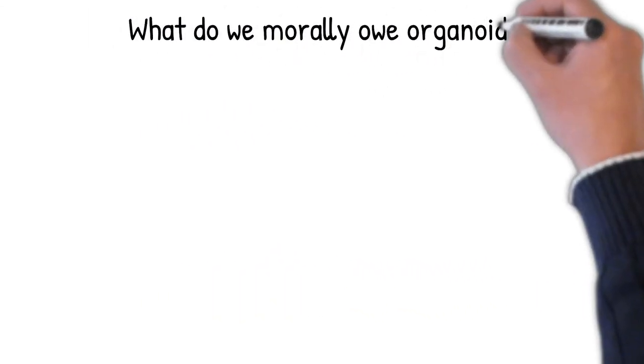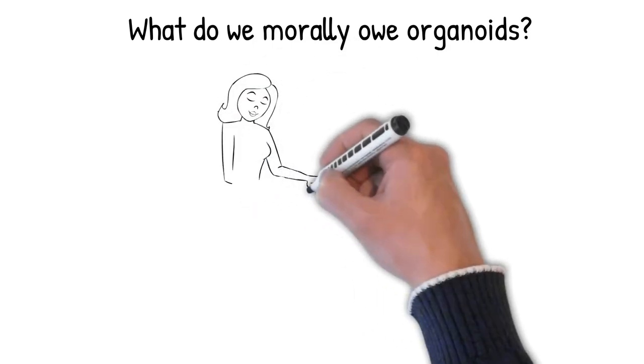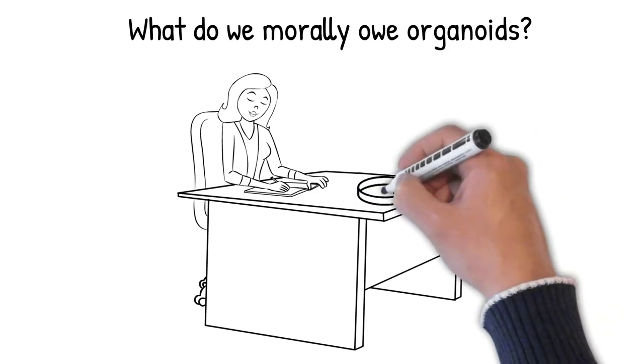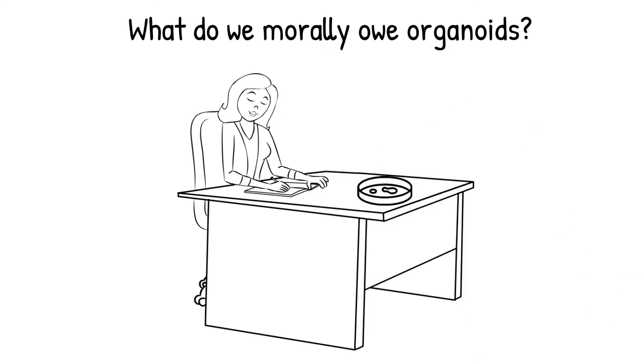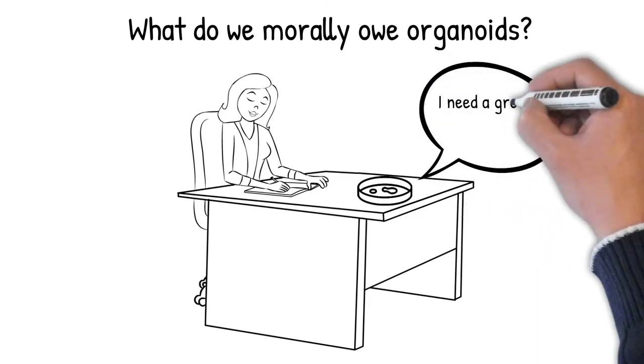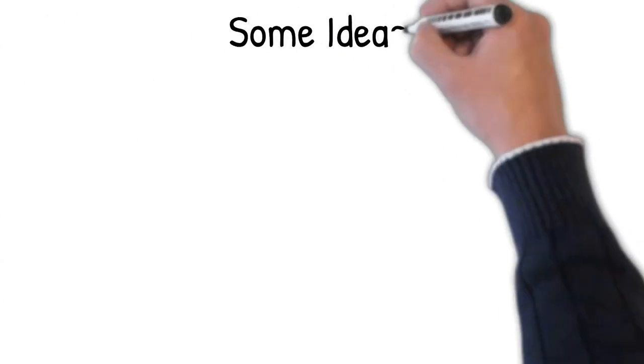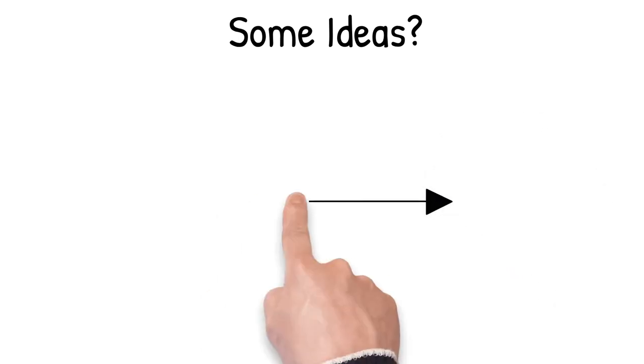So, what are we supposed to do if organoids have a moral status? How are scientists supposed to morally treat brain organoids or gastruloids and consider their interests? Should they be kept alive as long as possible? Should they treat organoids differently if they're from a different species? Do researchers morally owe less to a mouse brain organoid than to a human brain organoid? There isn't yet a consensus on the answers to these questions in the bioethics community either.